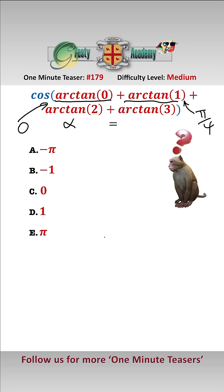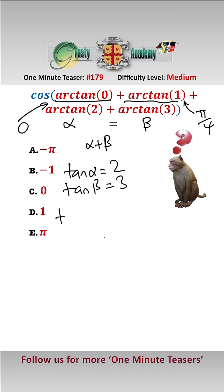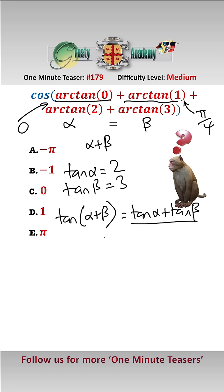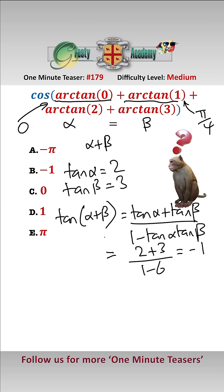Let's call arctan 2 alpha and arctan 3 beta, and we want to know what alpha plus beta is. Well, tan of alpha is 2 and tan of beta is 3. So tan of (alpha plus beta) — we use the formula: tan alpha plus tan beta over 1 minus tan alpha tan beta — which equals 2 plus 3 over 1 minus 6, which equals minus 1.